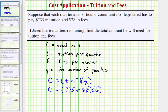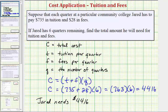So simplifying on the right side, we simplify inside the parentheses first. 735 plus 28 is equal to 763. So we have 763 times six, which equals 4,416. Which means Jared needs $4,416 for his remaining six quarters.